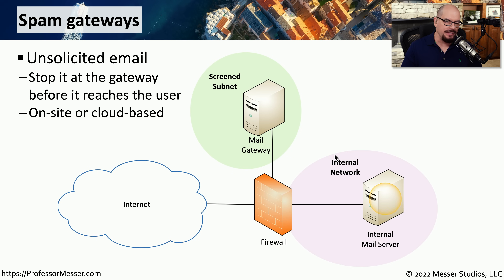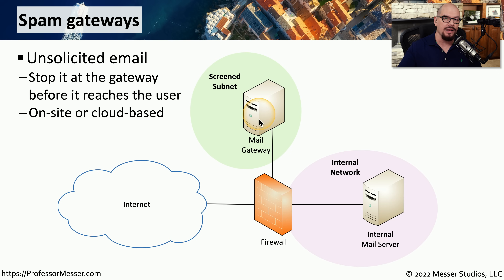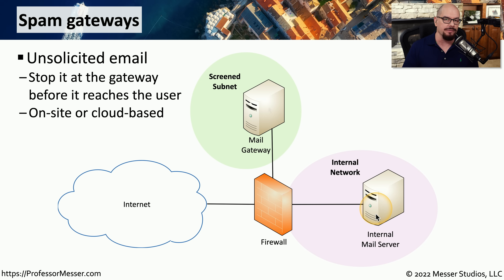Some organizations will have a separate mail gateway in their network. In this example, mail is being sent and received from the internet through a firewall that then sends it to the mail gateway on a screened subnet. These mail gateways can also be stored in the cloud, with a third-party provider offering that functionality. Once the mail is scanned, it can be sent to the internal network and stored on a local internal mail server. This gives the opportunity to categorize mail as spam or to completely reject mail and prevent its access to the internal server.